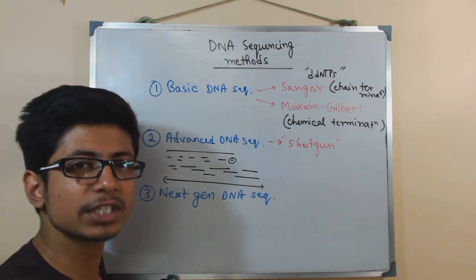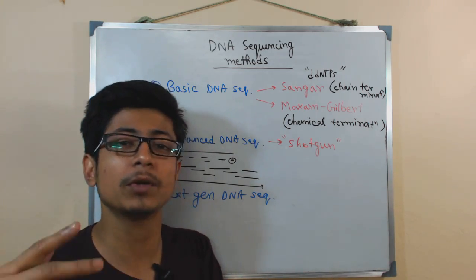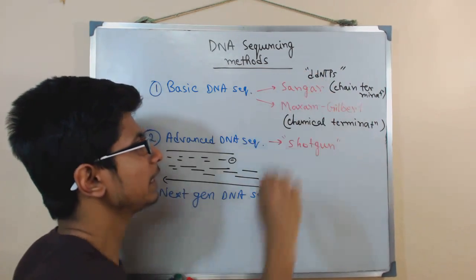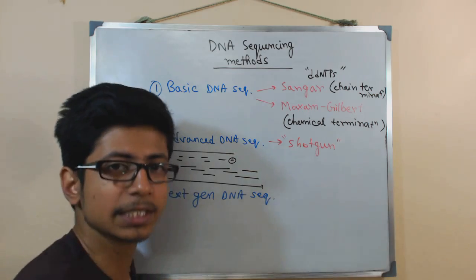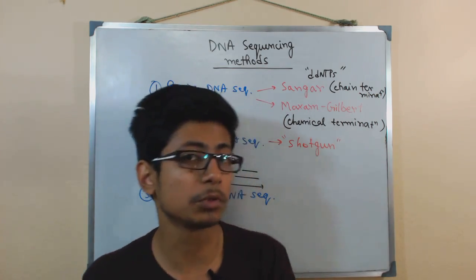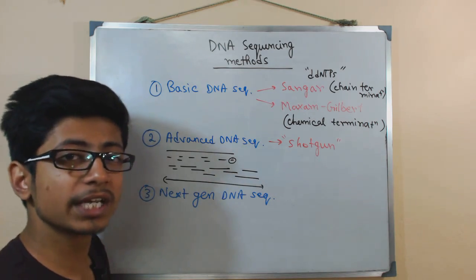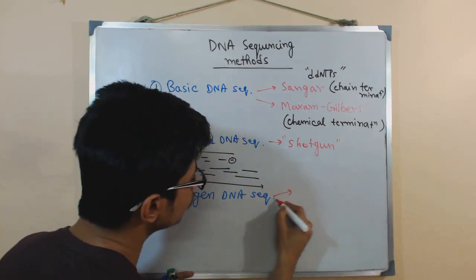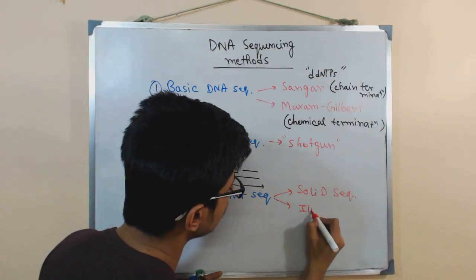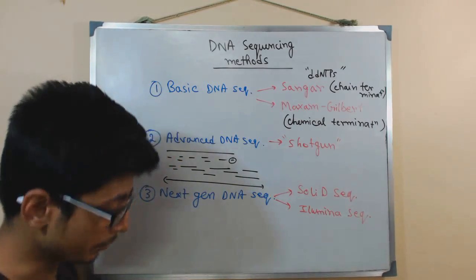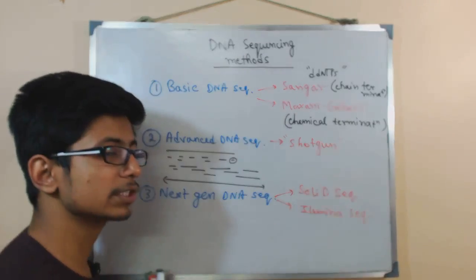To achieve this, we need next-generation sequencing (NGS) technologies that analyze huge stretches of DNA rapidly and simultaneously, with computer assistance to interpret results. There are two generations within NGS; we are currently in the second generation. Two major examples are SOLiD sequencing and Illumina sequencing, and there is also pyrosequencing. All are used in next-generation sequencing workflows.